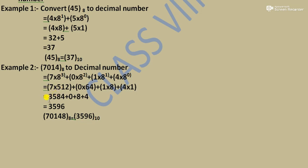Calculating: 7 × 512 = 3584, 0 × 64 = 0, 1 × 8 = 8, 4 × 1 = 4. Now we add them all: 3584 + 0 + 8 + 4 = 3596. So the decimal equivalent of octal 7014 is 3596.